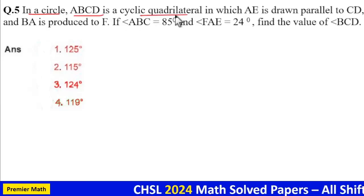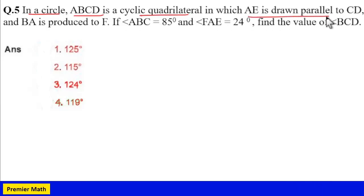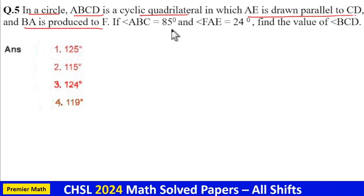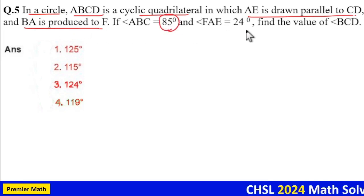In a circle, ABCD is a cyclic quadrilateral in which AE is drawn parallel to CD, and BA is produced to F. If angle ABC is 85 degrees and angle FAE is 24 degrees, find the value of angle BCD.